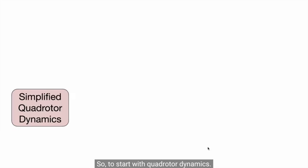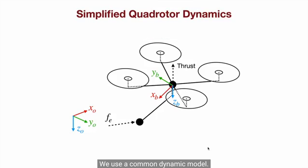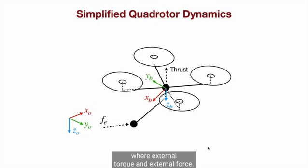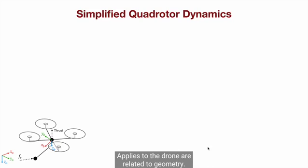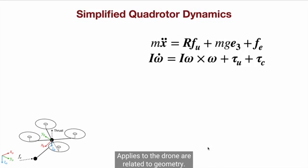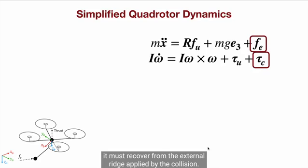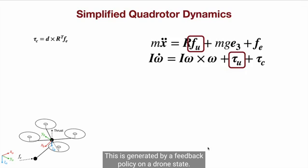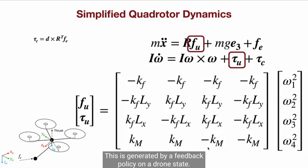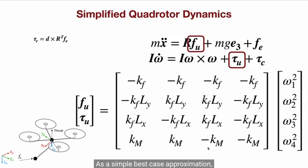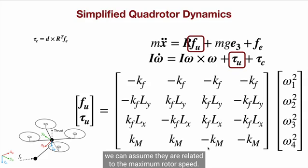So to start with quadrotor dynamics, we use a common dynamic model, where external torque and external force applied through the drone are related to geometry. For the drone to remain stable after the initial collision, it must recover from the external wrench applied by the collision. This is generated by a feedback policy on the drone's state, as a simple best-case approximation, we can assume they are related to the maximum rotor speed.